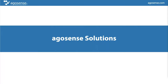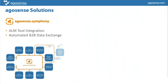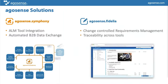Now let's go to the Argosense solutions. We have two products. The main product, Argosense Symphony, covers two aspects: ALM tool integration as well as automated B2B data exchange — for asynchronous synchronization with other parties, for example. And we have Argosense Fidelia as a traceability and requirements management product, which is quite new in the market. We think it's a very good alternative to old-fashioned requirements management tools, offering a lot of very modern functionality and architecture.